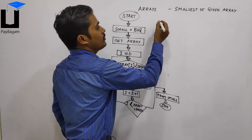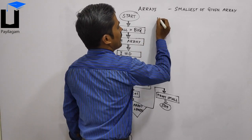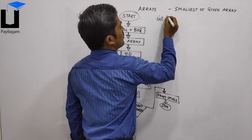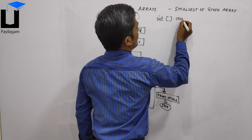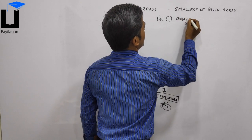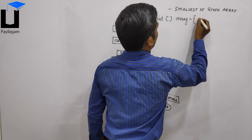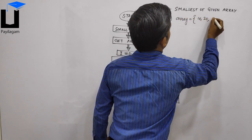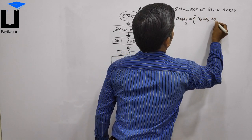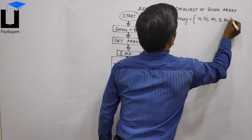Now we have an integer array. In this array, we have the values 10, 20, 40, 5, and 50.